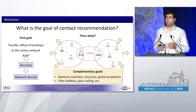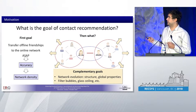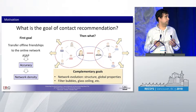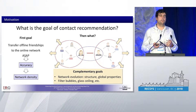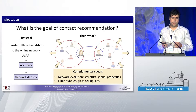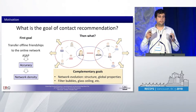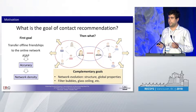So beyond the first goal, which just focuses on the accuracy and how the density of the network is increased, we want to focus on additional goals which would drive a beneficial property for all the users in the network — for example, using contact recommendation to reduce filter bubbles.